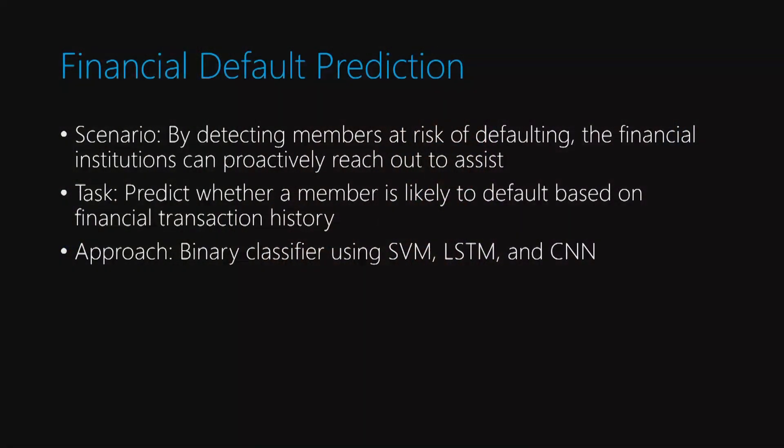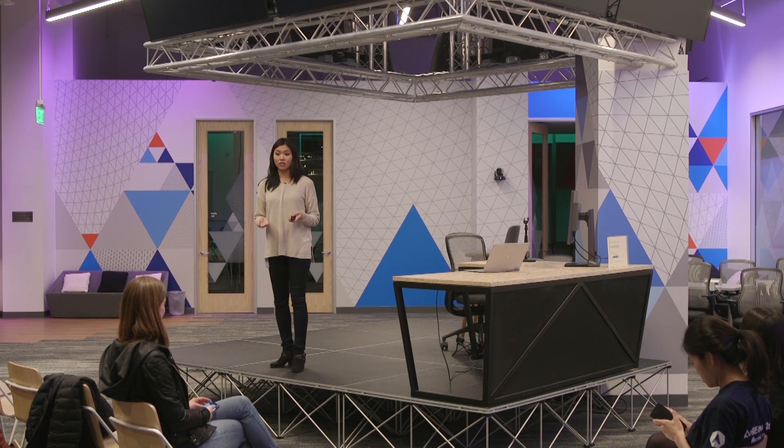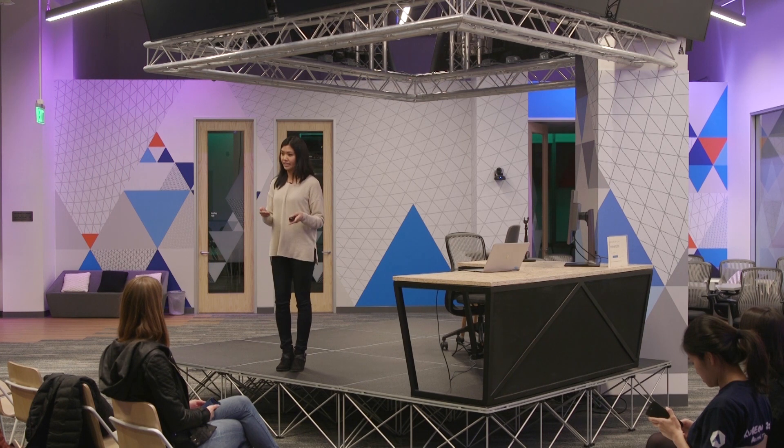The problem I wanted to share with you today is on financial default prediction. I worked recently with an organization of credit unions where the scenario was: could they predict which of their members were likely to default or not, based on the transaction histories of those members? The impetus for the project is that when they can detect financial distress, they can proactively reach out — get members on the phone and say, hey, we know this bill is coming up, maybe we'll help you pay that down. They actually gave an example of paying down a washer and dryer for a particular member to help them get above water, which helps prevent larger default in the long run.